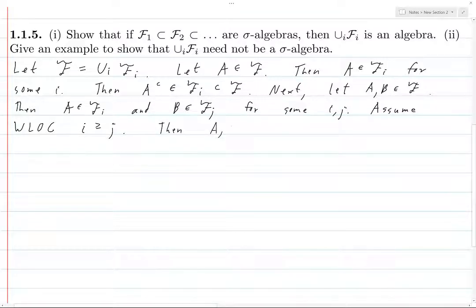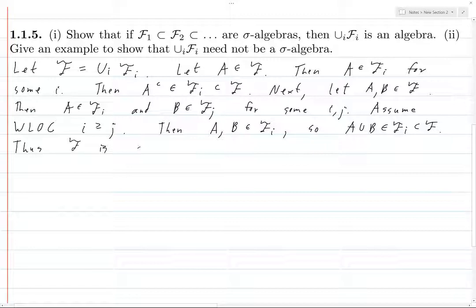So, the order doesn't really matter, so we'll just assume that i is the bigger one. Then, A and B are both in Fi because Fj is contained in Fi because this is an ascending chain of sigma algebras. So, A union B is in Fi because Fi is a sigma algebra, so it's closed under unions. So, thus,